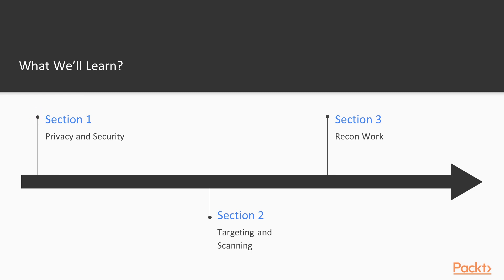In our course overview, the first section is privacy and security. We will be covering different methods that hackers utilize in order to remain anonymous, from setting up a secured and private email account to using VPN services as well as custom proxy services. The next section will be focusing on targeting and scanning — discovering how to lock onto our target and scan all possible methods for penetration testing.